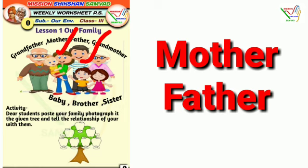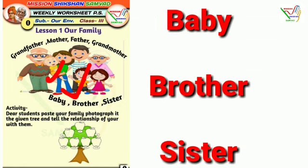Now you are seeing mother and father. M-O-T-H-E-R — Mother. F-A-T-H-E-R — Father. So mother and father are two more members of your family, and you have learned the spelling of these family members.